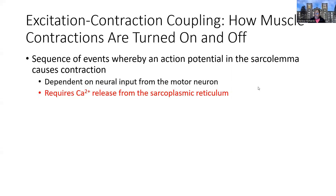We're looking at how muscle contractions are turned on and turned off — the process referred to as excitation-contraction coupling. This is where the action potential events on the sarcolemma, which is just the muscle term for the membrane. This region is where the contraction begins, and it's going to depend on the neural input, the stimulus coming from the motor neuron, as well as calcium being released from the sarcoplasmic reticulum.